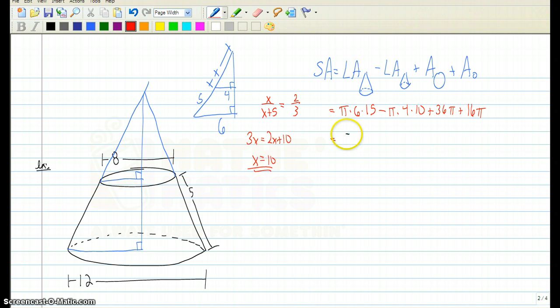Now when you combine these together that's 90 pi minus 40 pi plus 36 pi plus 16 pi. And if you do the algebra on this that's 50 plus 36 that's 86. 86 plus 16 would be 102 pi and that is approximately 320.44 units squared.